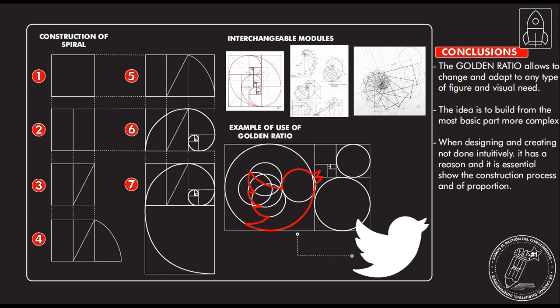As a conclusion, we can say that the golden ratio allows you to change and adapt to any type of figure and visual need. The idea is to build from the most basic part to the most complex. When designing and creating, nothing is done intuitively — that is something very important. The golden ratio, layouts, and design guidelines tell you that nothing is intuitive; everything has to have a proportion, a layout, and a structure.